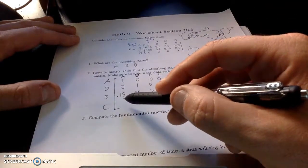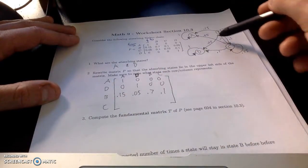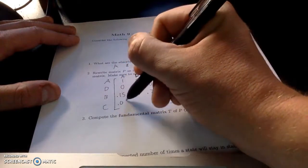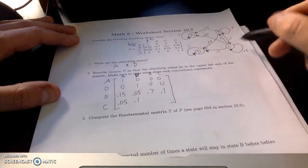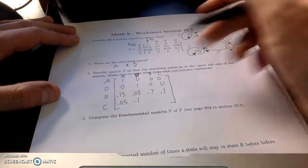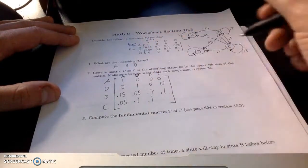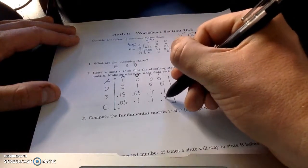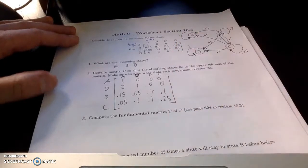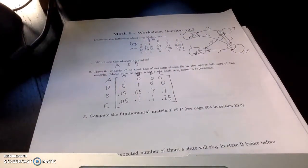And state C moves to state A at a 0.05%. C moves to state D at 0.1%. C goes to B at 0.1%. And D stays in state C, excuse me, at 0.25%. All right. OK.